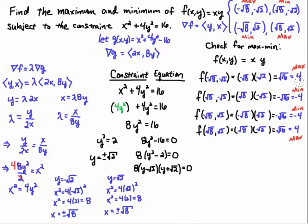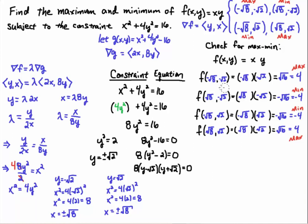So the maximum values are 4, occurring at (minus root 8, minus root 2) and at (root 8, root 2). The minimum values are minus 4, occurring at (root 8, minus root 2) and at (minus root 8, root 2). These are the max and min of this function constrained to this ellipse. Good luck.